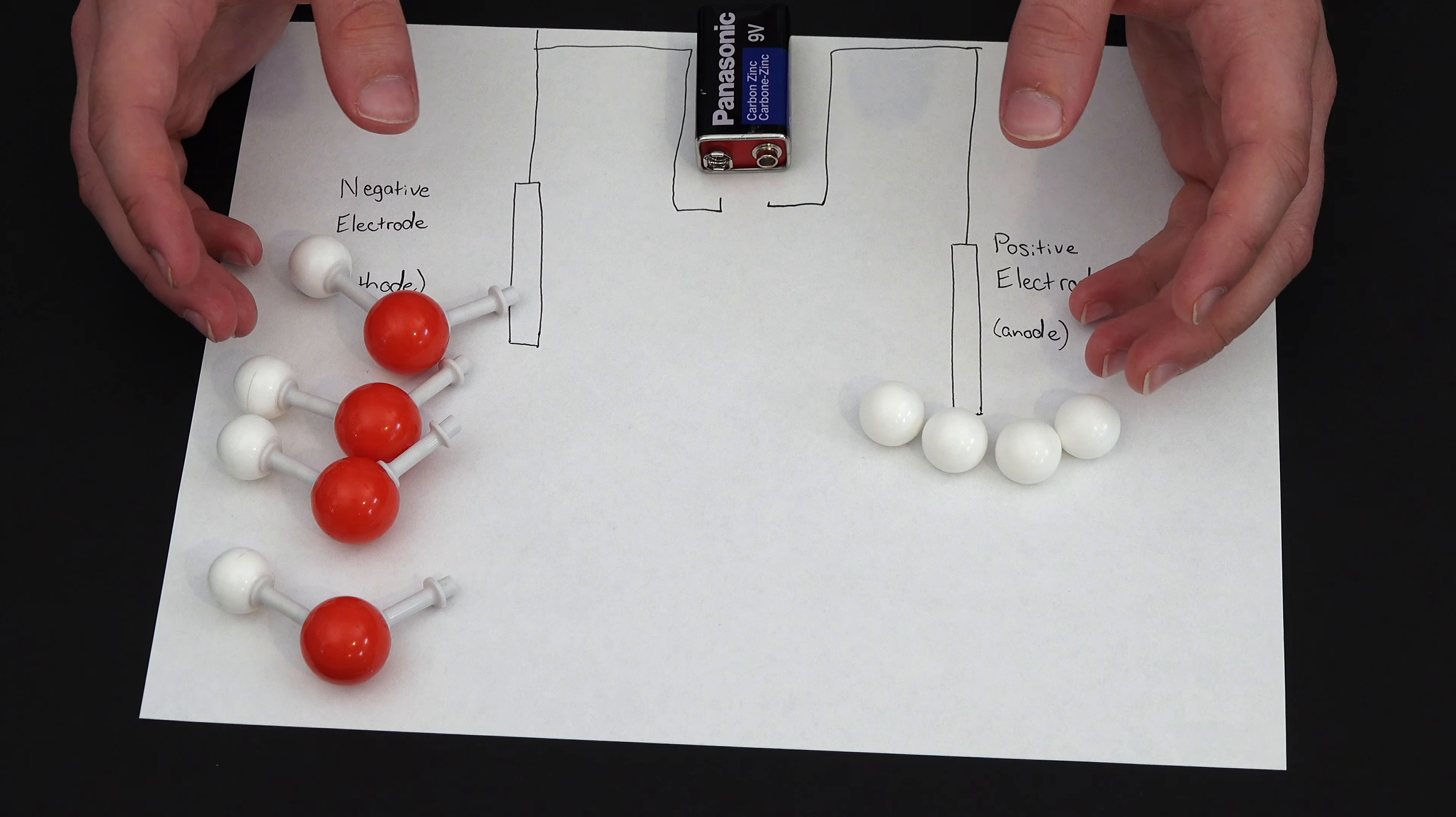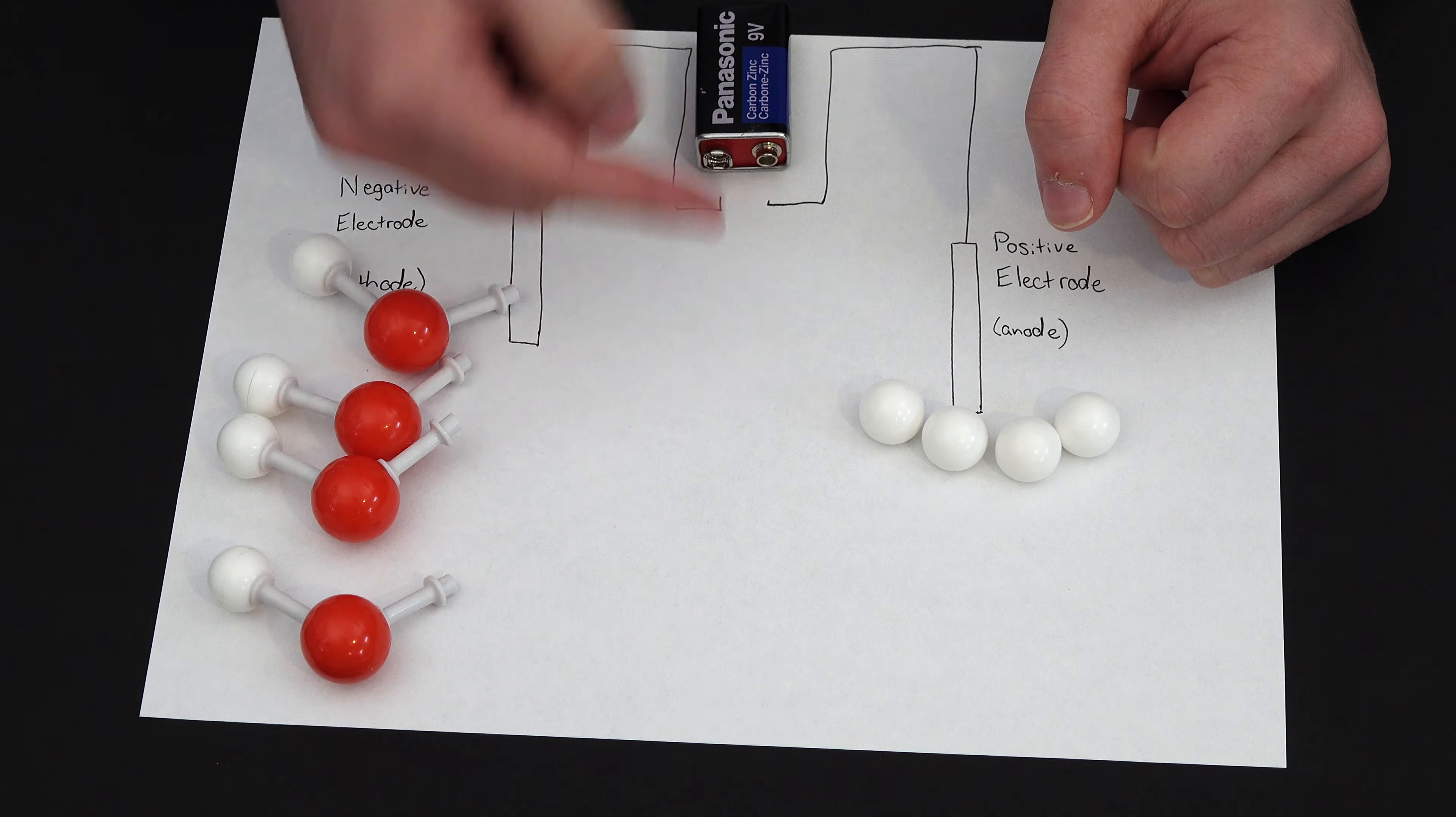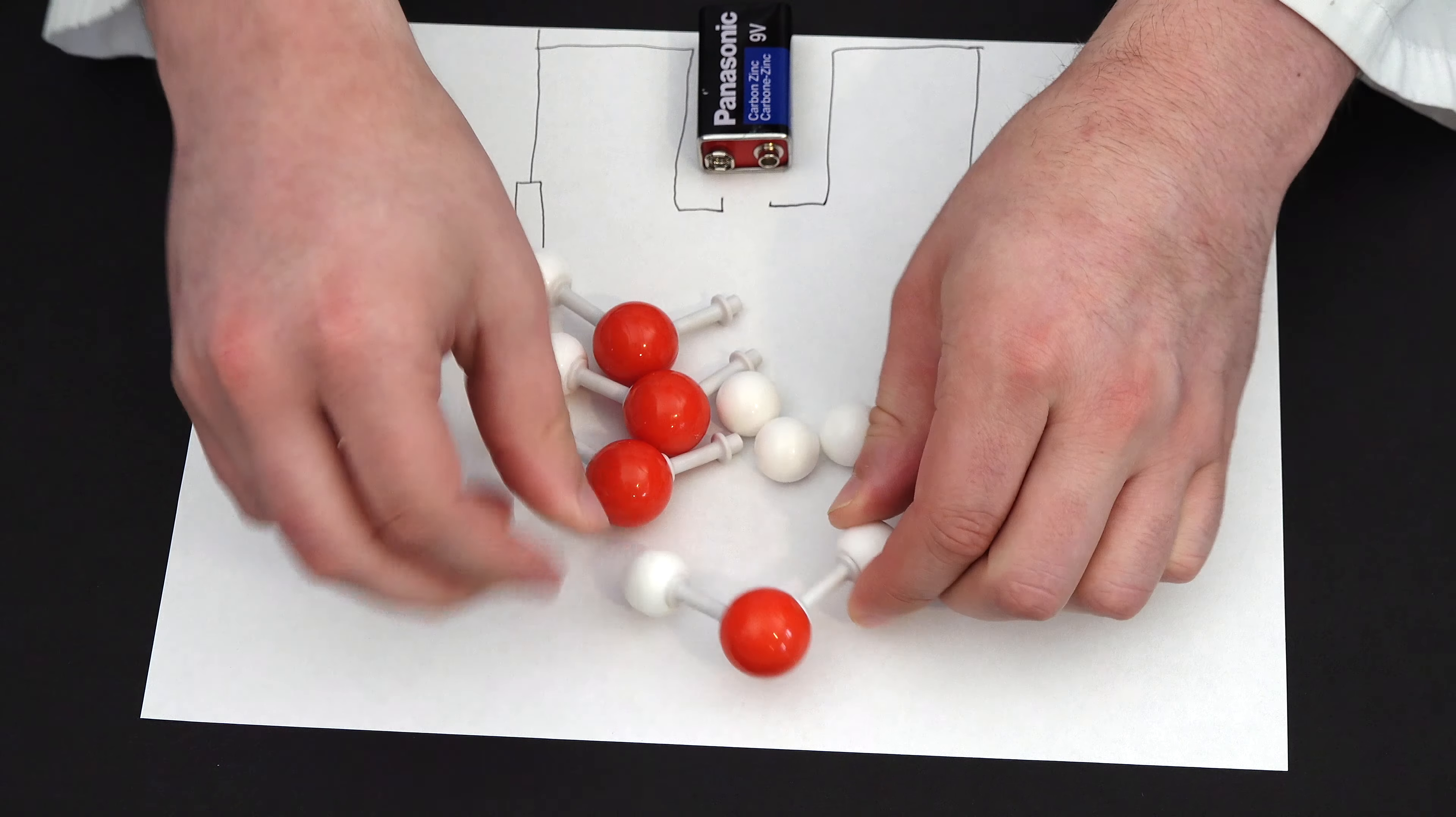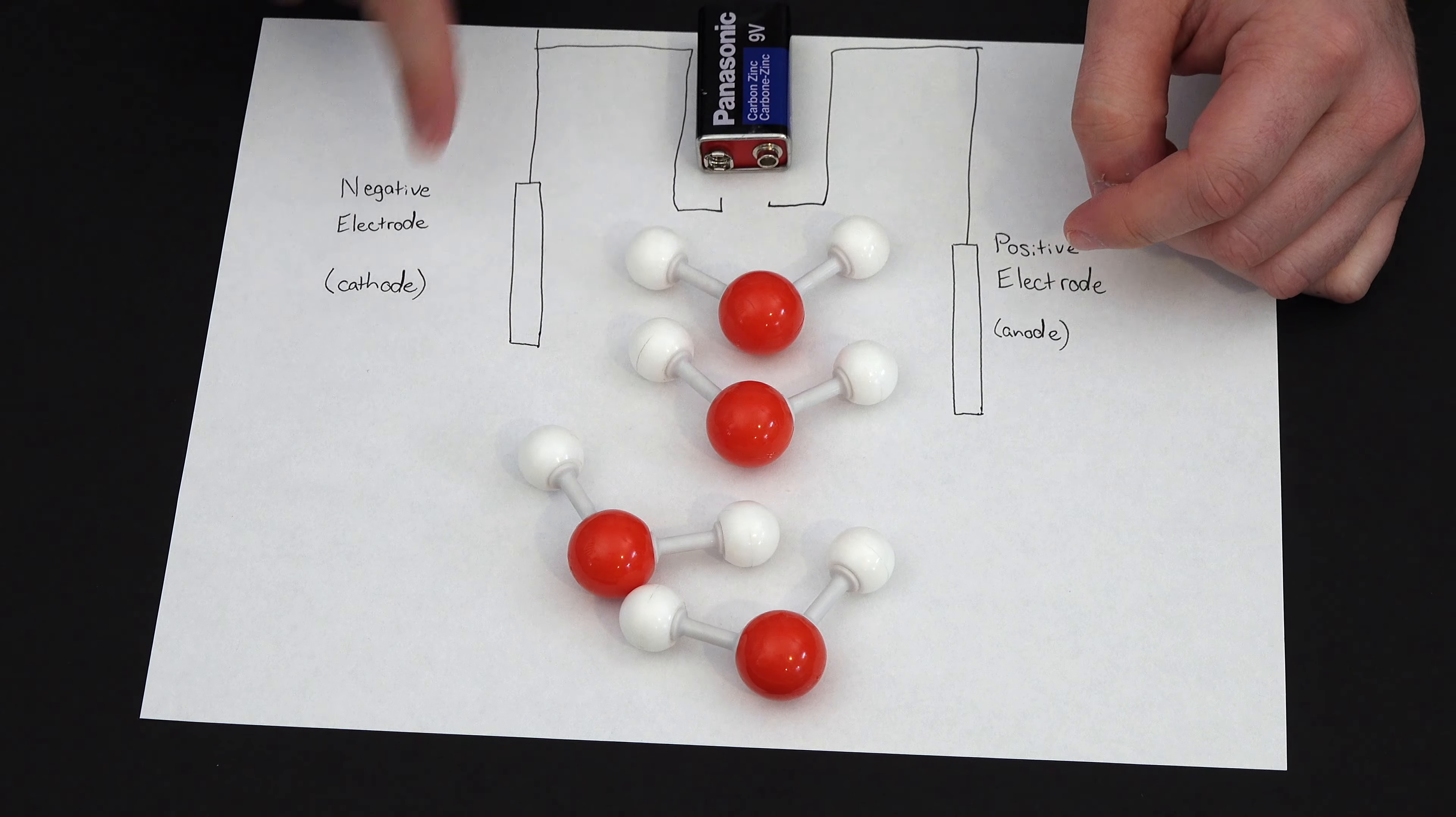So that creates an electric field. The positively charged ions are going to move down the electric field, and the negatively charged ions are going to move up the electric field. So these four hydrogen ions, four hydroxide ions move together, and join back together. And this forms water. And that completes our circuit.